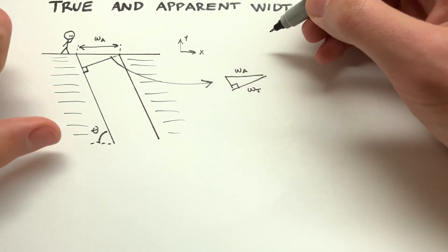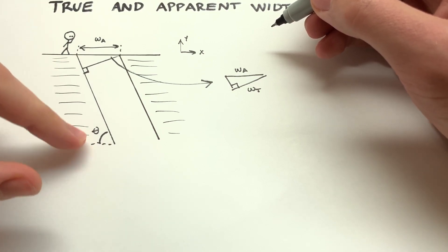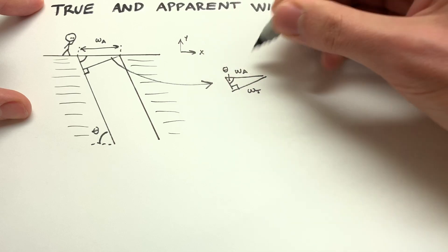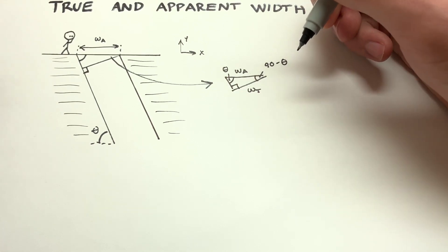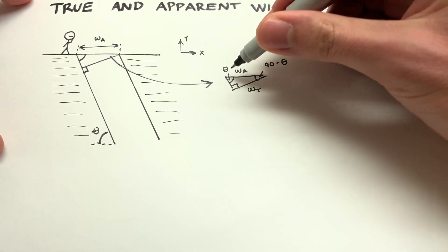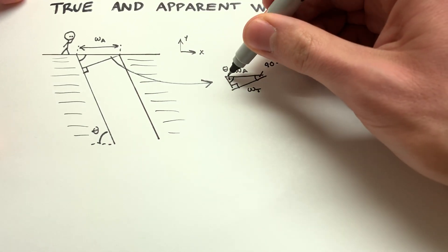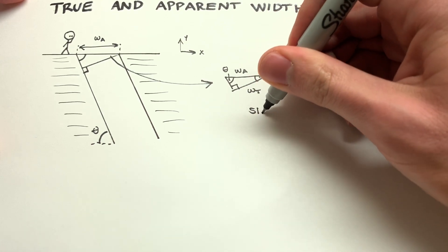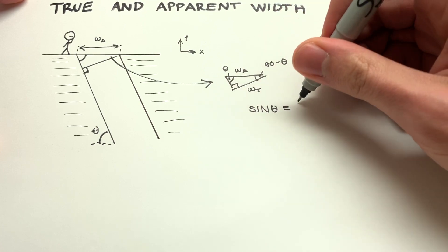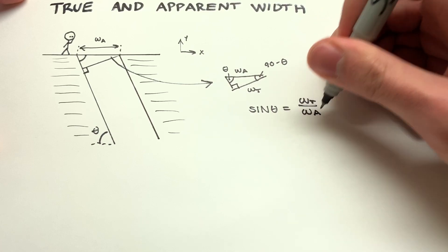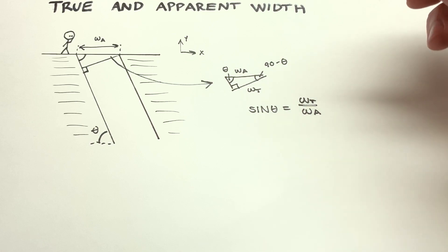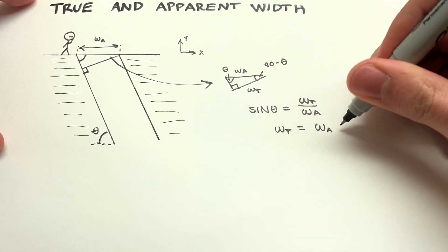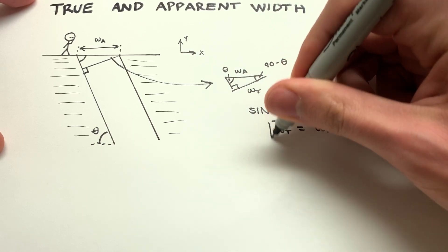So we can come in here and say, okay, we can do some simple trigonometry here. If we know that this is theta, then this angle up here must also be theta. And then this here is, of course, going to be 90 minus theta. So we've completely defined that triangle there. So we can go in and say, well, let's see, let's look at theta rather than 90 minus theta. We have the hypotenuse here and the opposite side here. So we're going to say that the sine of theta is going to be equal to the true width divided by the apparent width. And of course, you'll look at this and you'll say, okay, so the apparent width, now we can multiply that over to get the true width on its own. So true width is apparent width sine theta. And that's how we would find it in this case.